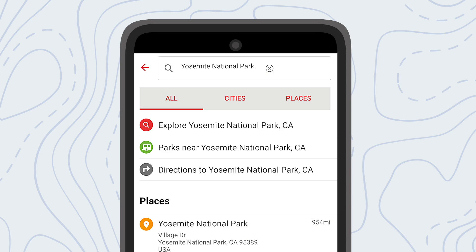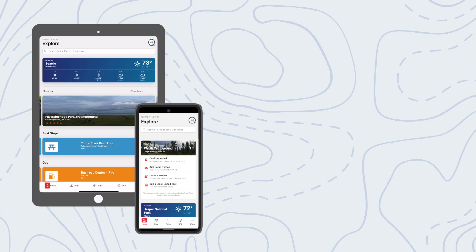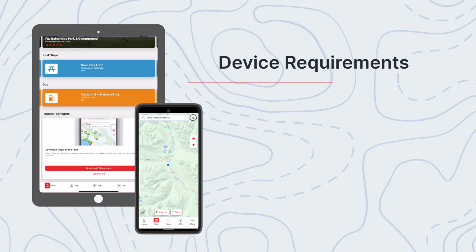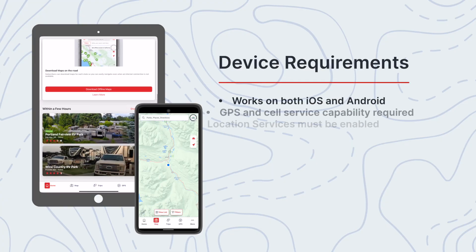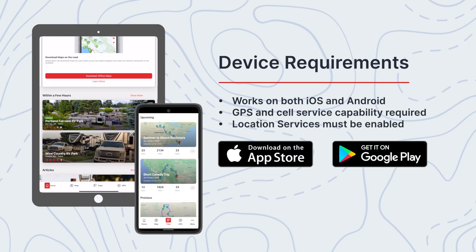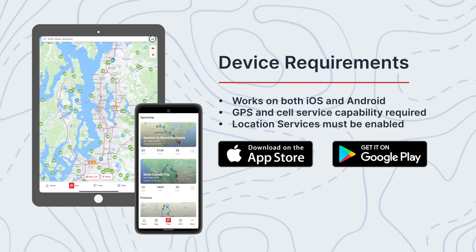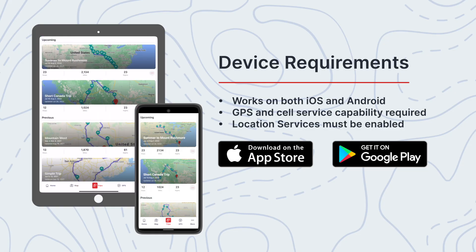As a reminder, the RV Life app is available on both iOS and Android phones and tablets, but for navigation to function a GPS enabled device is required. Not all tablets will work for navigation — be sure yours has GPS capability to run navigation.